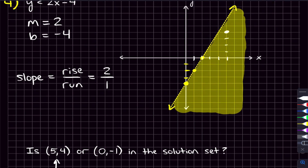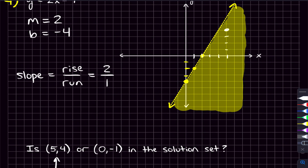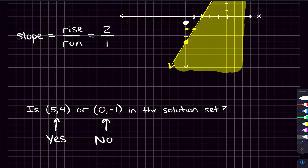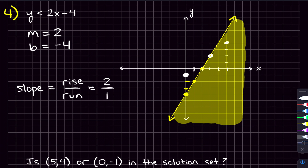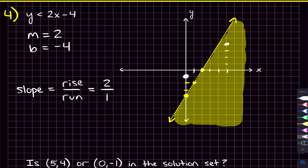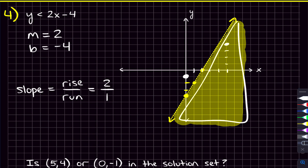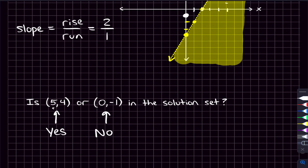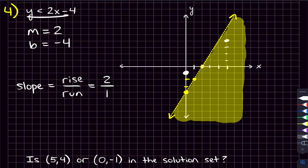What about zero comma negative one? Zero means we're not going over left or right, and negative one means we're going down one. That point is not in our shading. So it's not in the solution set. But what about a point on the line? Like the point three comma two — that's not going to be in our solution set because this is a dotted line. If it was a solid line, we'd include it. So that's one way to figure it out. But let's say you didn't have the graph — could you still figure this out? Yeah, because all of these points are supposed to work in the inequality. So you can plug these points into the inequality and see if they work.